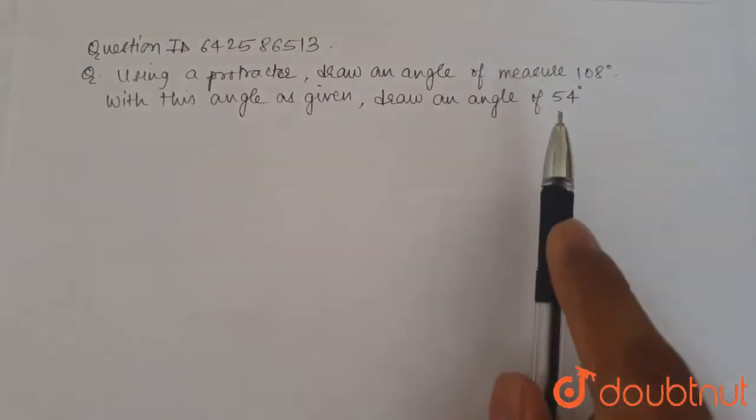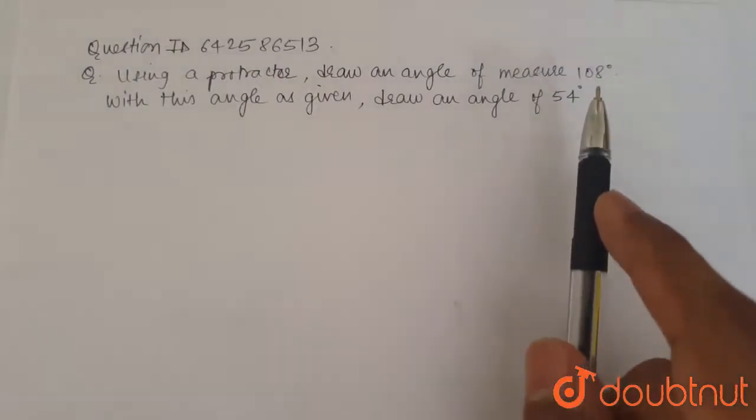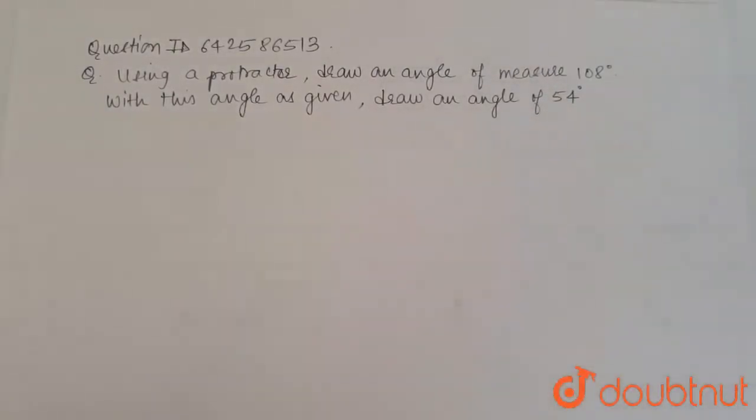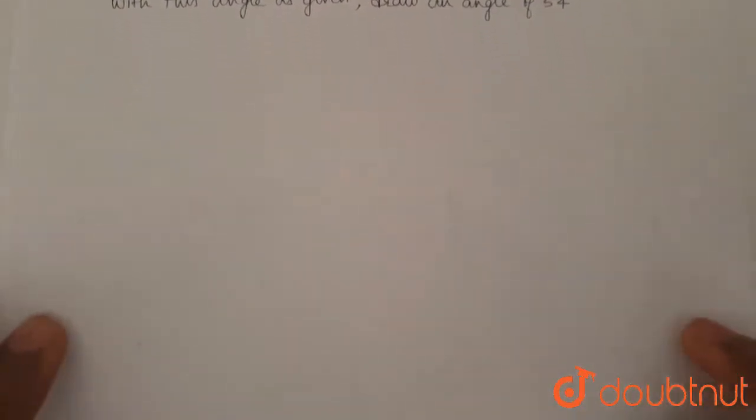So if we see, 54 degrees is half of 108 degrees. So we have to basically make an angle bisector over here. So we start by initially making an angle of 108 degrees.